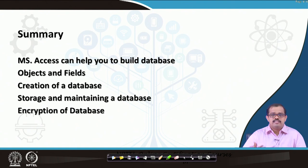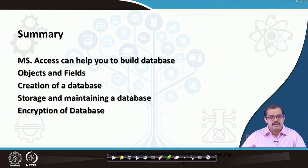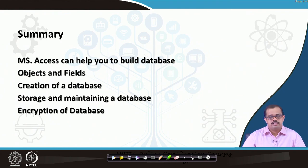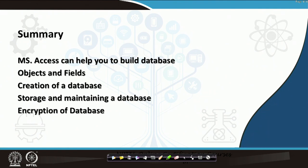In summary, we started by refreshing what a database management system is and how a relational database works. We looked at Excel as a good quantitative analytical statistical sheet for holding data. Then we looked at Microsoft Access - what objects and fields mean, how to store and maintain a database, and finally how to encrypt and secure a database, which is extremely important today. In the next class we will look at more database aspects and more details of database handling. Till then, have a nice time. Thank you.